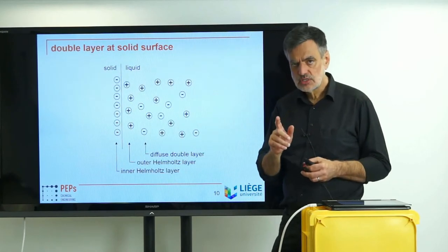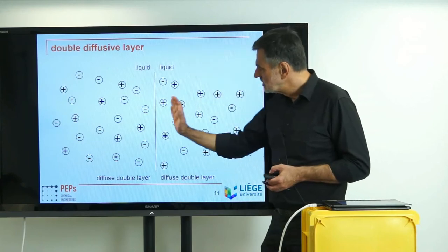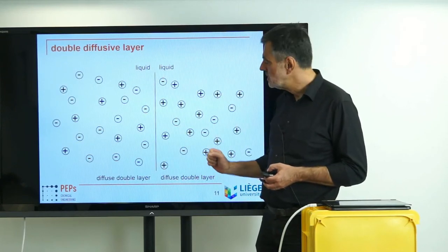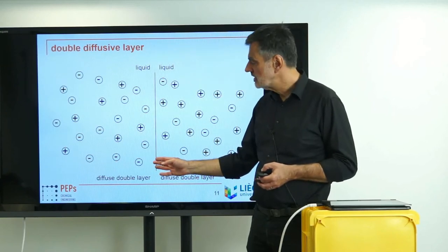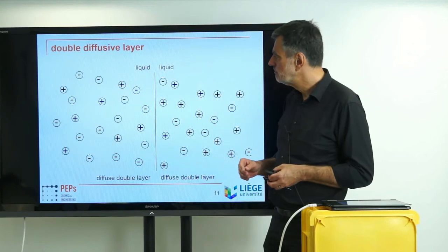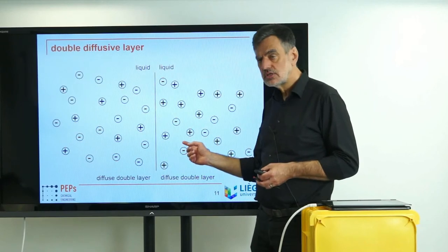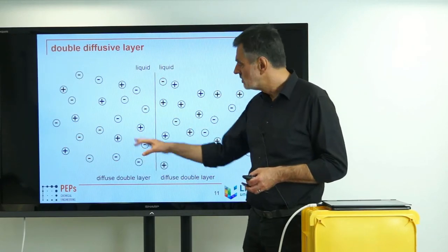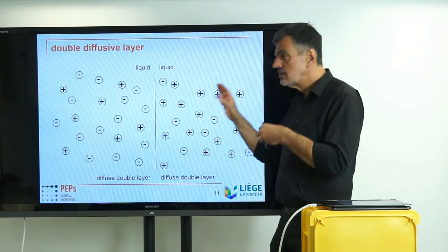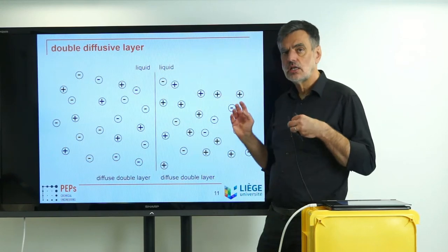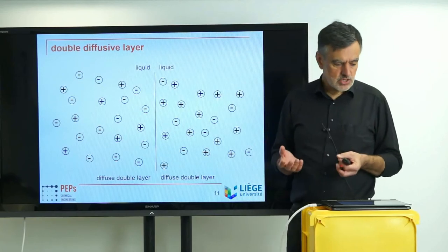For liquid-liquid systems we don't have this solid surface, but instead we have a combination of diffuse double layers. On one side there is a slight positive excess of ionic species — more cations close to the interface. On the other side there is a slight excess of anions close to the interface. So we have a double diffuse double layer in our system in both liquid phases. This is induced because the positive ions would prefer to go a little bit into one phase, the negative ions would prefer the other phase. Close to the interface they manage to partially separate, and then electrostatics takes over so that the bulk phases are again electroneutral.